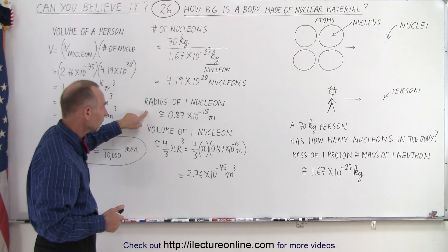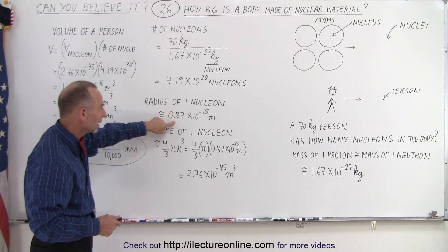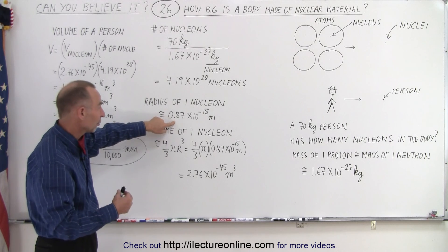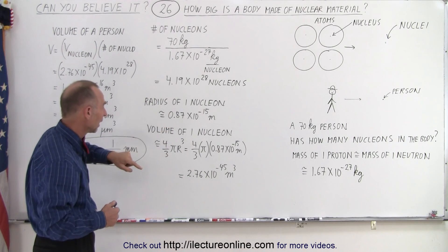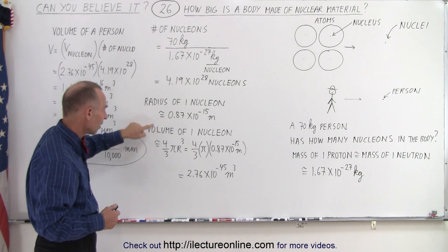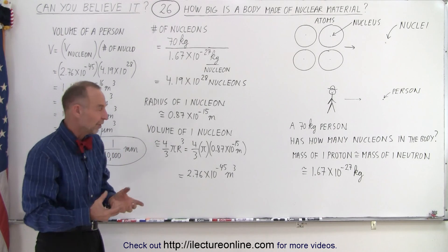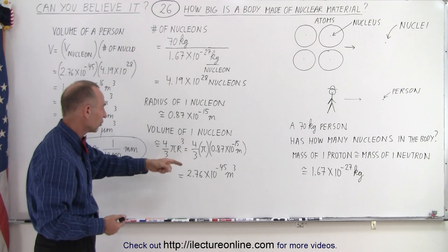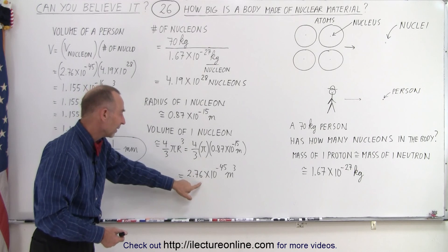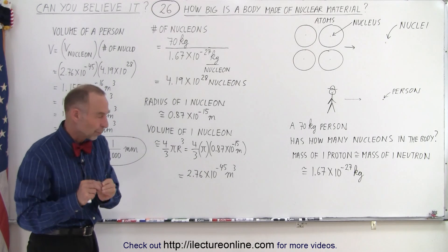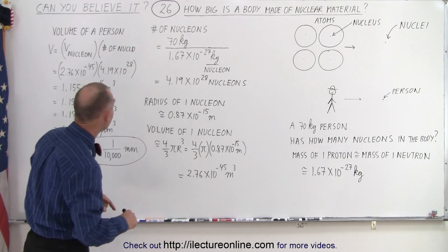Now, the radius of a nucleon is a little bit less than a femtometer, 10 to the minus 15 meters. And so, when we then calculate the volume, assuming that it's a sphere, we get 4/3 pi r cubed, and so we end up with this being the volume of a single proton, or a single neutron.